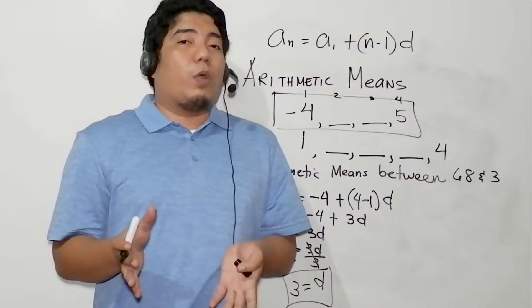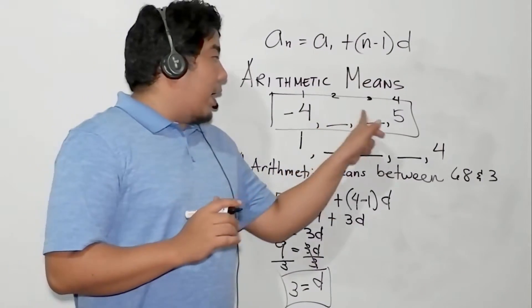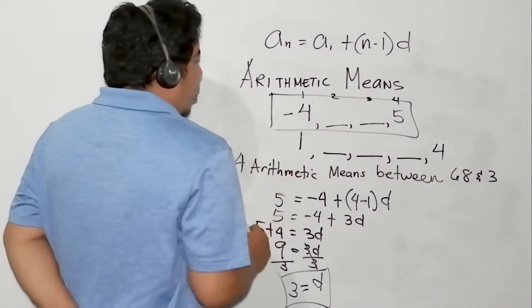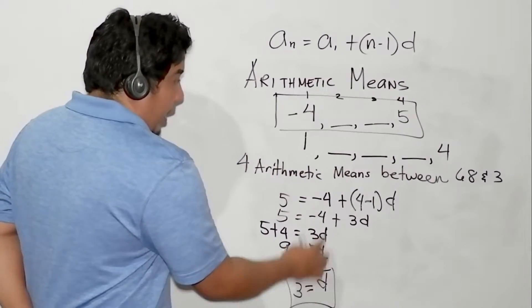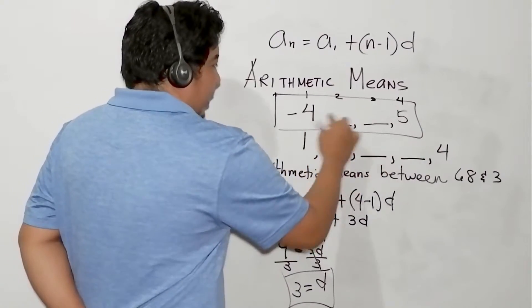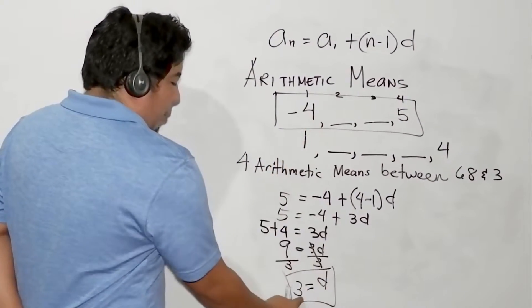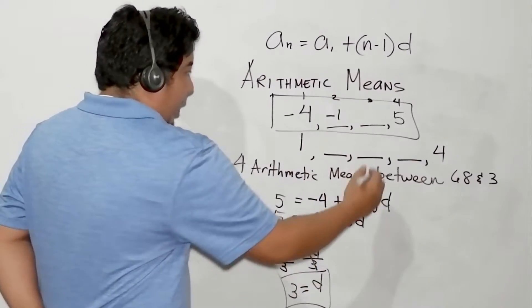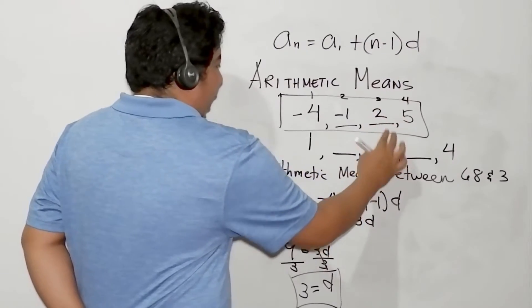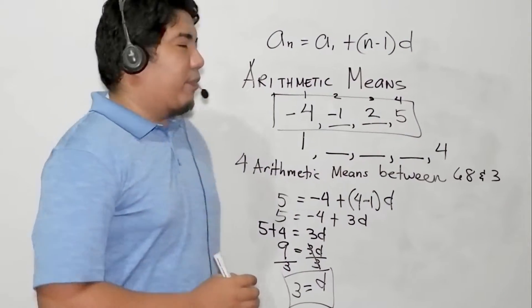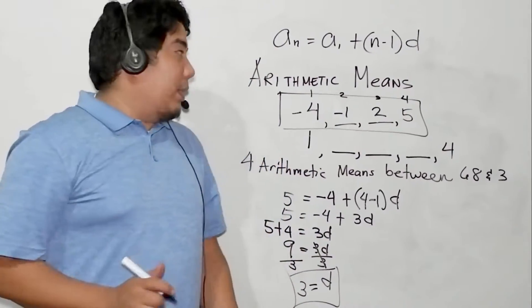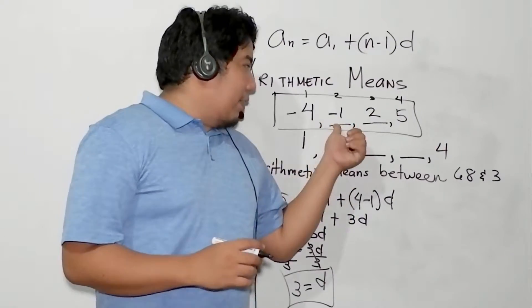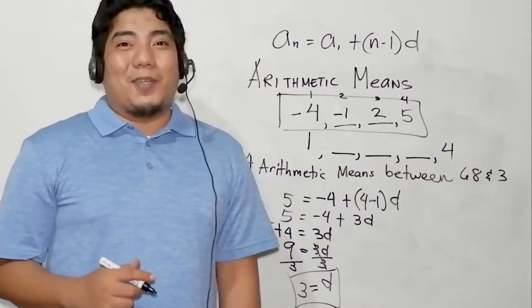But the question is, did we answer our problem? Not yet, because we are aiming to get the value of our arithmetic means. So since this is 3, and remember this is increasing, -4 plus 3, that is -1. -1 plus 3, that is positive 2. And positive 2 plus 3, that is positive 5. Therefore, the arithmetic means to our first given arithmetic sequence is -1 and positive 2.